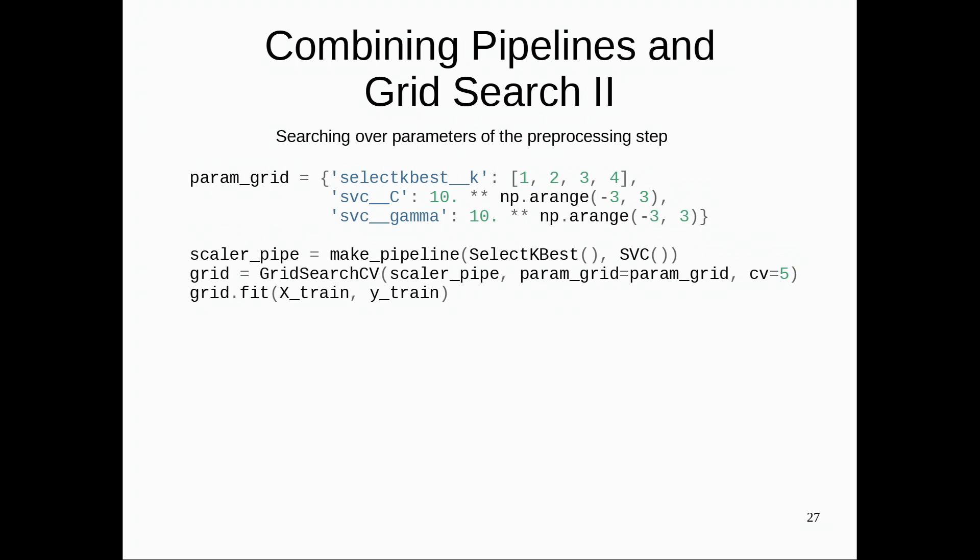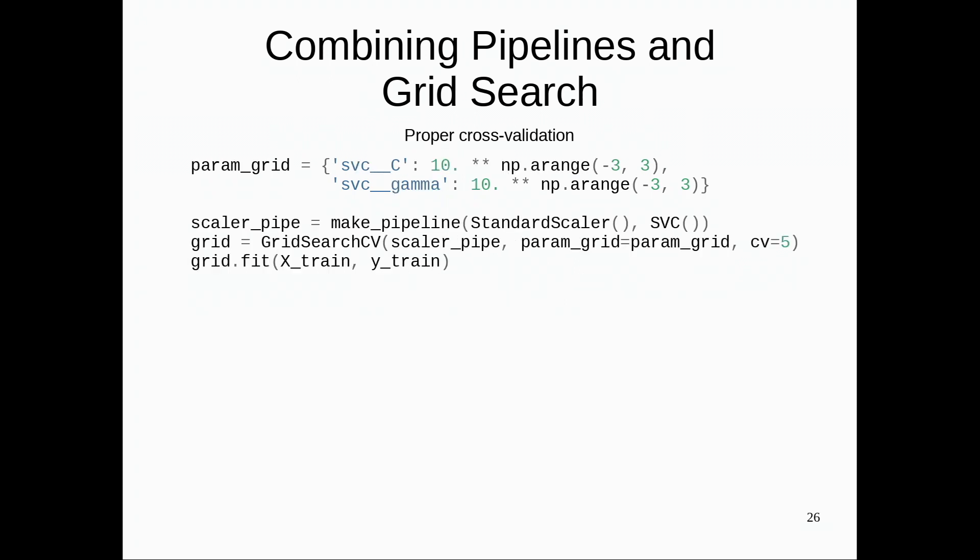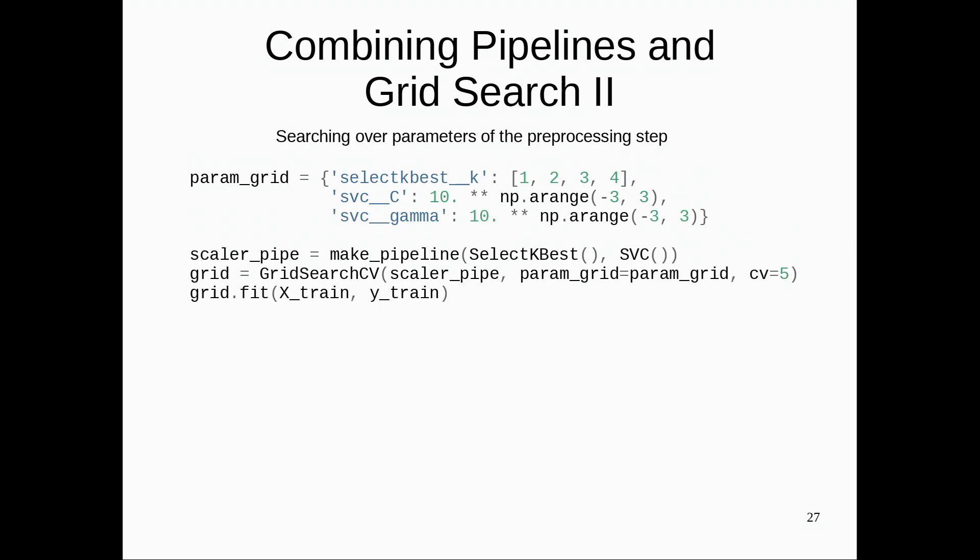And the cool thing about this is that you can not only do scaling and then grid search the parameters of the model, but you can grid search parameters of everything jointly. Usually preprocessing methods like feature selection also have parameters. So for example, here I do feature selection asking if I should use one, two, three, or four features. And so I can select over how many features should I select and the parameters C and gamma of the support vector machine together in this pipeline.